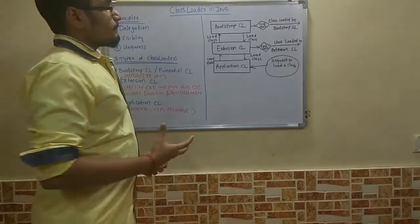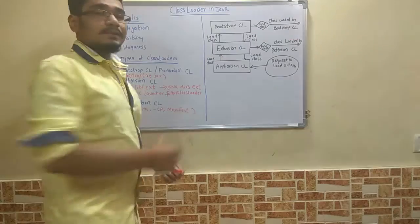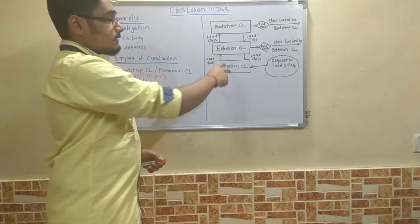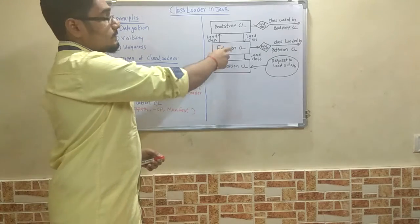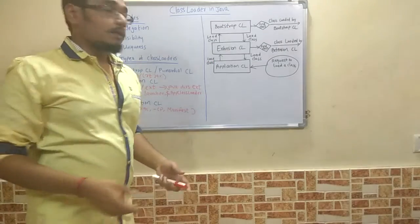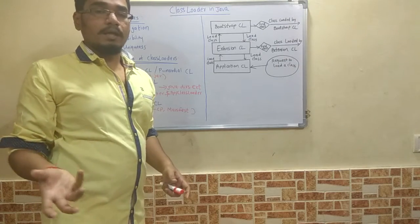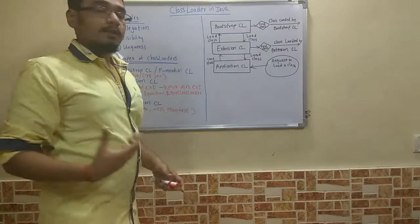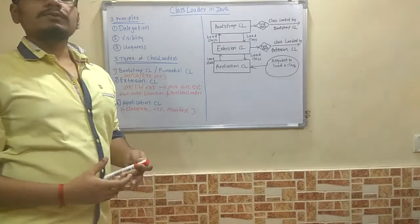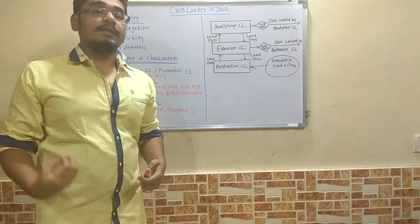Whenever the compilation starts, it starts from the application class loader. From there it goes up the hierarchy. This is the child class. It will call its parent class. This is how the flow of execution is done. First we have a request to load a class. First it will give the request to the application class loader. Application class loader will find whether that class is there within its directory.